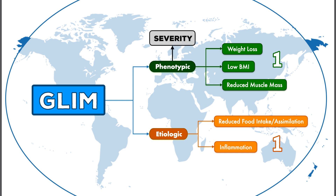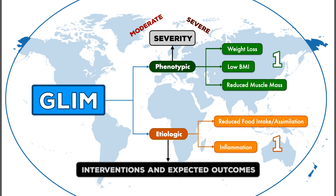The phenotypic criteria can then be used to determine the severity of malnutrition by looking at the cut points offered for moderate and severe malnutrition. The etiologic criteria don't influence severity, but according to the consensus report, they can help to guide appropriate interventions and expected outcomes.